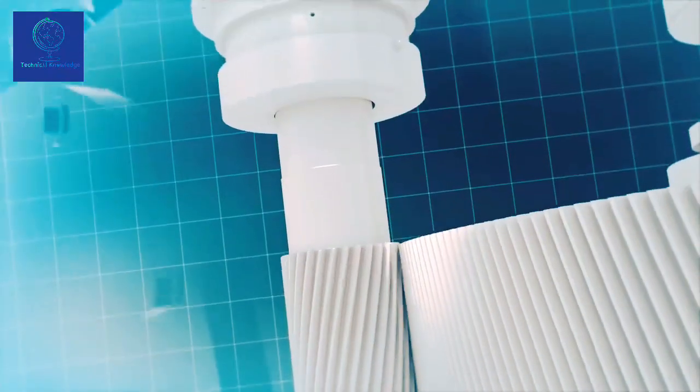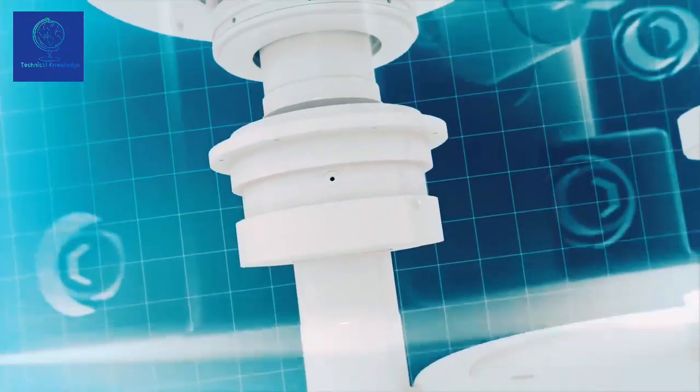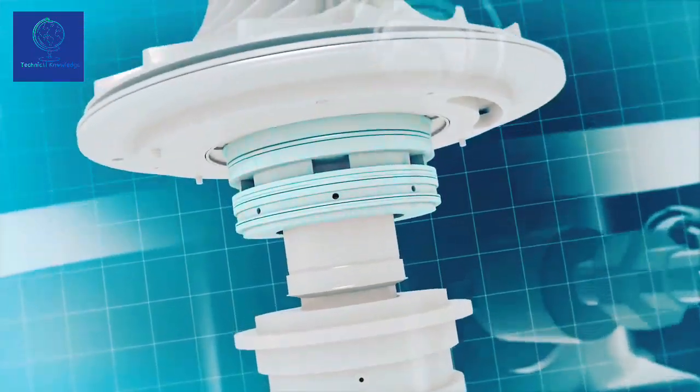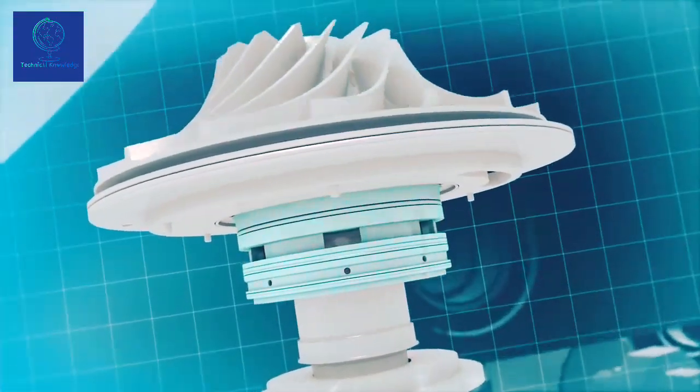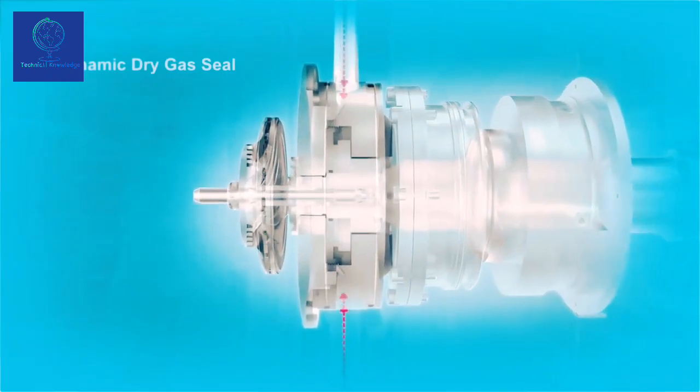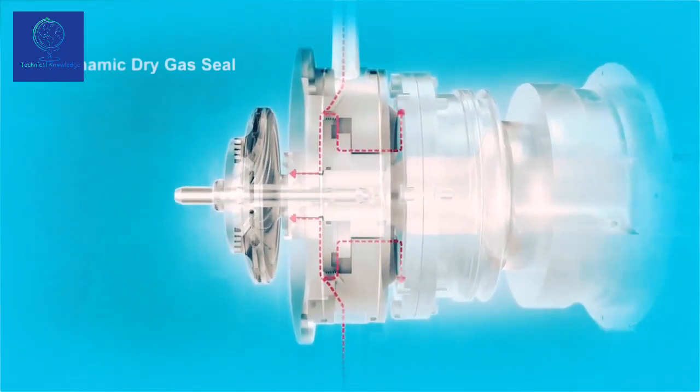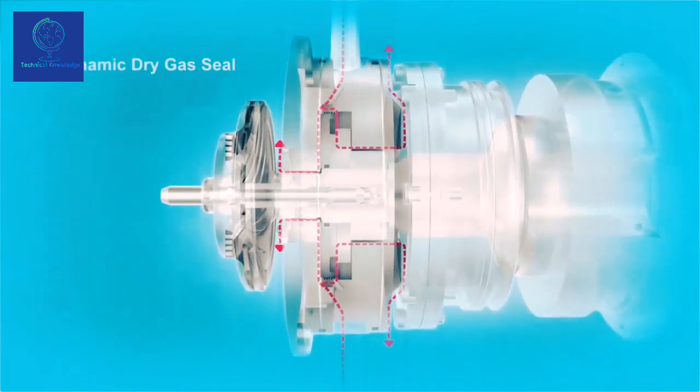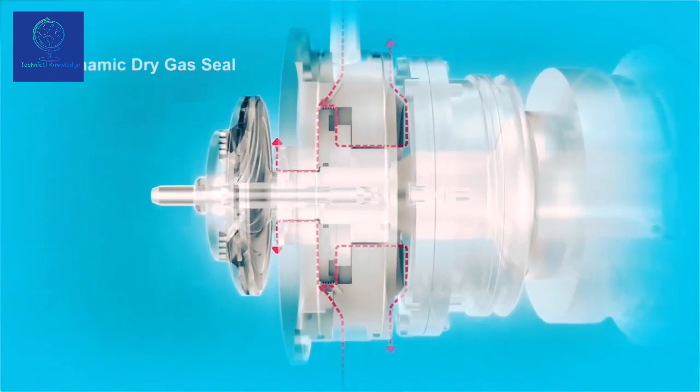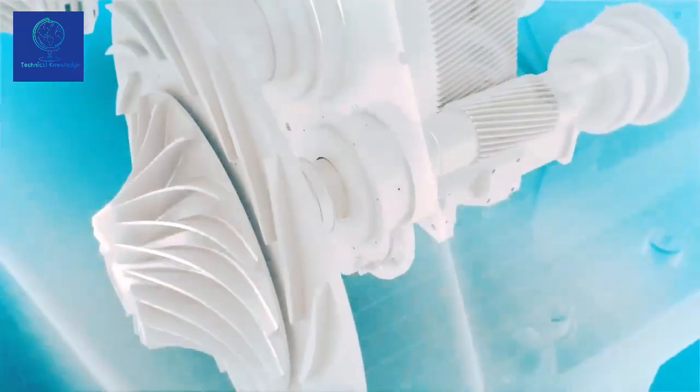For applications where process gas leakage is restricted, or when process gas needs to remain within the system, our integrally geared compressors can be built with dynamic dry gas seals. These seals can be supplied in single, double, or tandem arrangements, depending on the application.